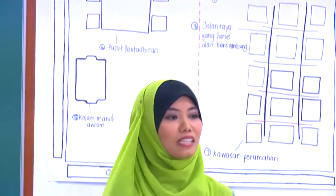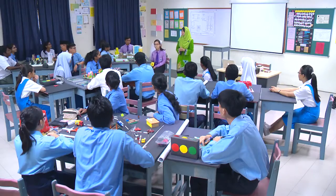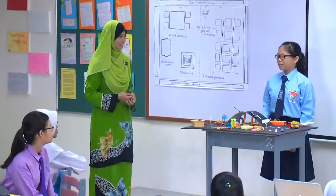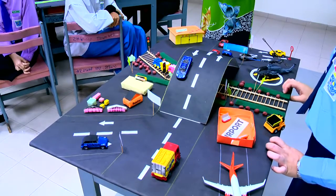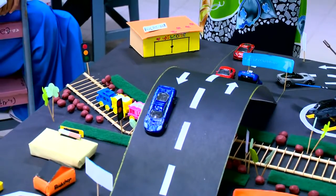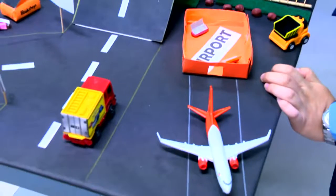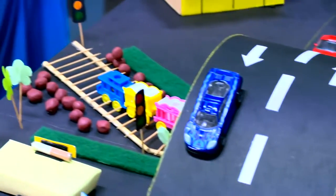Sekarang Cikgu nak minta wakil yang membuat sistem pengangkutan tampil ke hadapan. Selamat sejahtera kepada Cikgu dan rakan-rakan sekalian. Kumpulan kami telah menghasilkan satu ciptaan model sistem pengangkutan. Dalam model ini kita dapat lihat dengan jelasnya terdapat jalan raya yang lurus dan bersambung ke beberapa tempat utama seperti kawasan perumahan dan pusat pentadbiran. Selain itu, dalam model ini terdapat juga lapangan kapal terbang, tapak helikopter, dan landasan MRT yang dapat memudahkan pergerakan serta menjimatkan masa untuk pergi ke sesuatu tempat. Sekian, terima kasih. Tahniah kepada kumpulan lima, satu pembentangan yang baik.